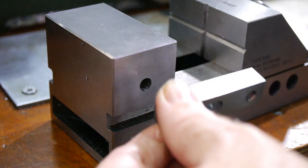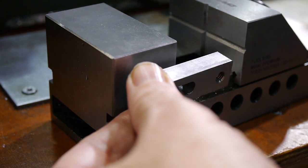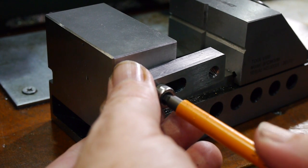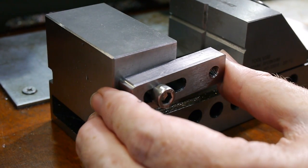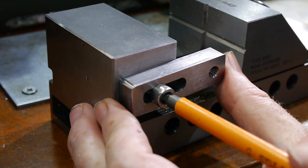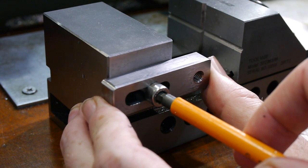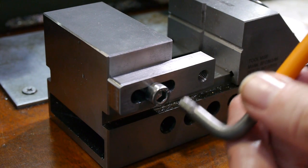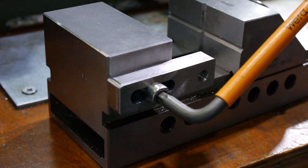At this point the main features are complete, so it's time for a test fit. The pre-ground surface of the steel sits firmly against the side of the vise, and seems stable.